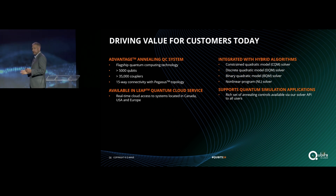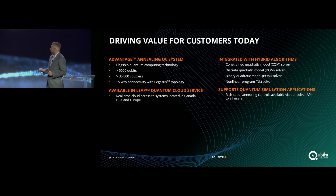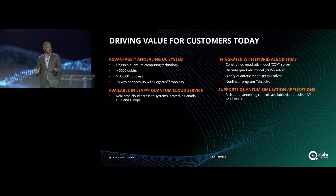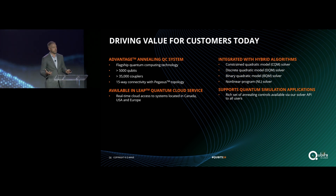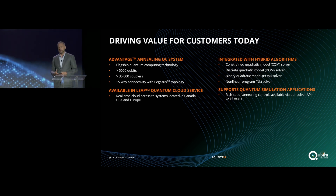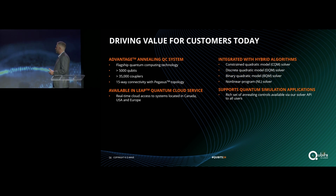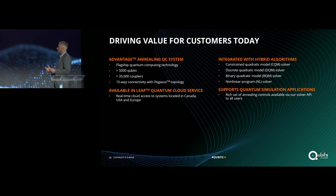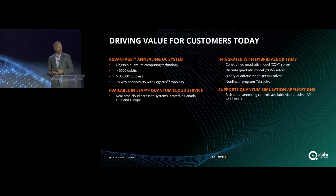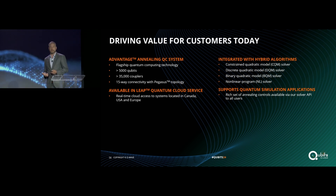We're seeing a growing use case around quantum simulation of materials, especially magnetic materials. Our solver APIs offer a rich set of annealing controls, including forward annealing, fast annealing, and reverse annealing, to really support investigation and the growing class of quantum simulation use cases.